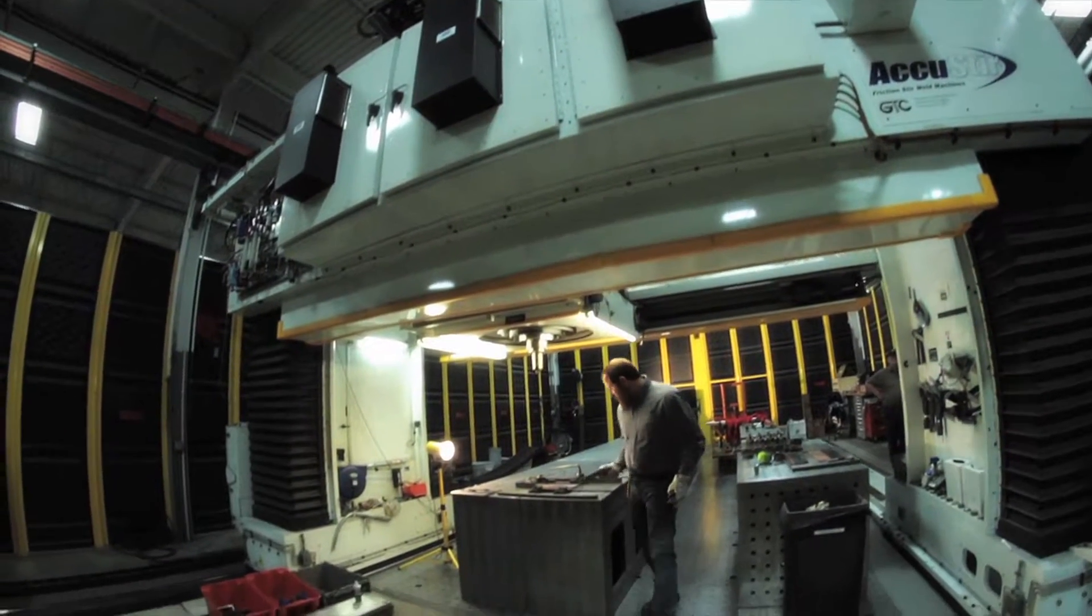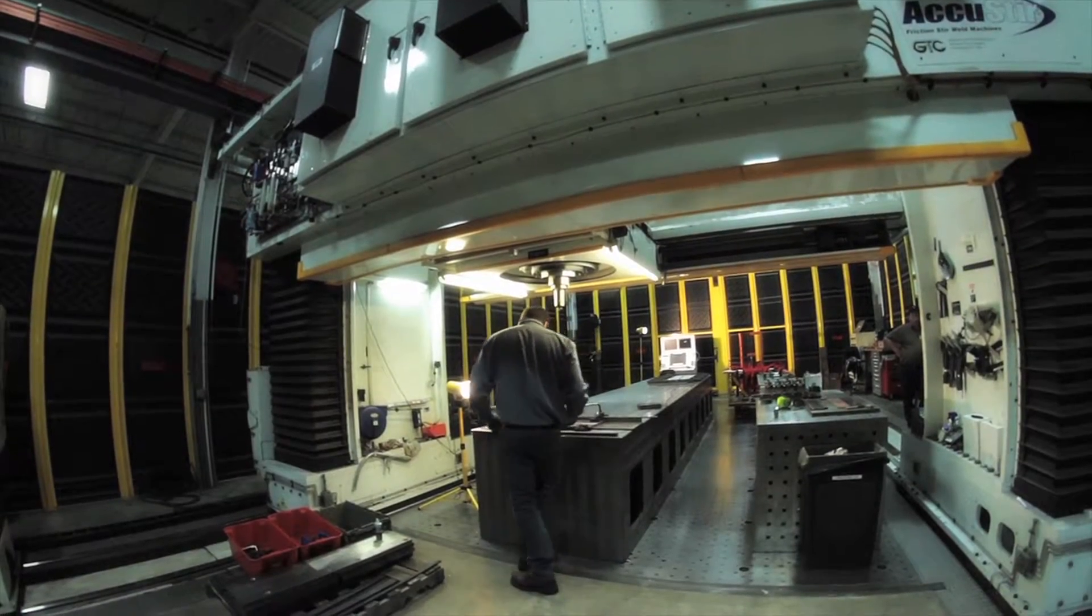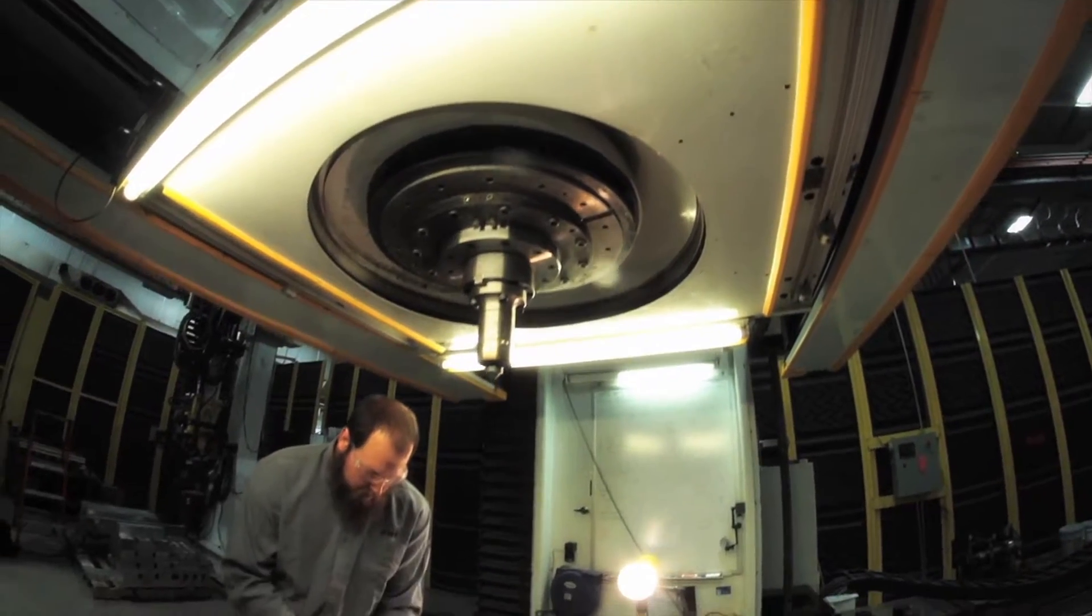Friction stir welding is a solid state process which can be used to join a variety of materials ranging from aluminum to titanium.